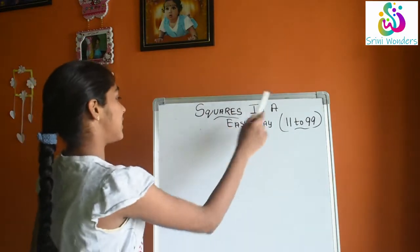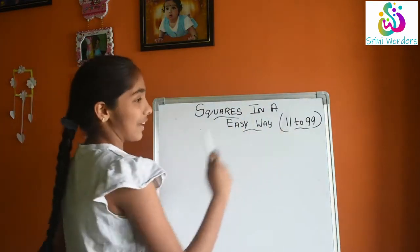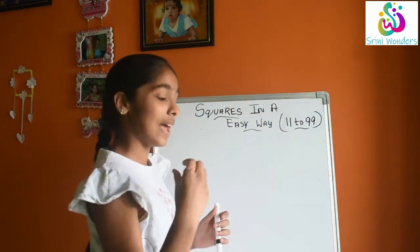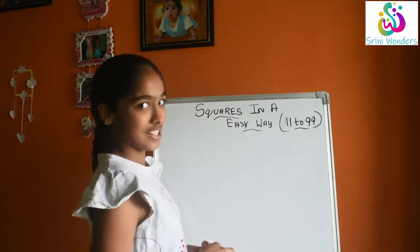Hi everyone, welcome to 21 dash. So in today's video I am going to tell squares in a easy way, 11 to 99. I will tell a trick which will help you to do 11 to 99 squares in a easy way.